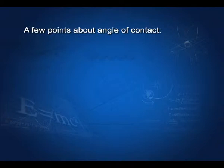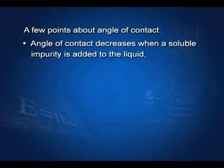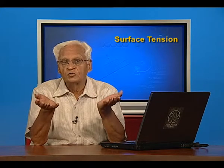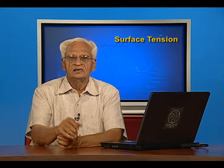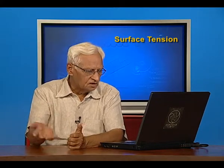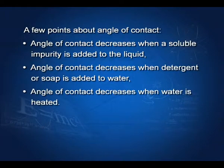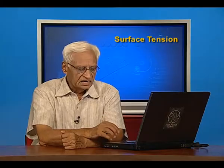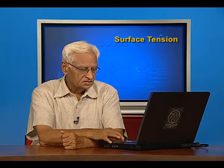Angle of contact decreases when a soluble impurity is added to water — for example, salt or sugar which is soluble in water — then the surface tension and angle of contact decrease. Angle of contact also decreases when water is heated. The angle of contact involving solids and liquids is an indicator of the wettability of the solid by the liquid, whether the liquid will be able to wet the solid or not.